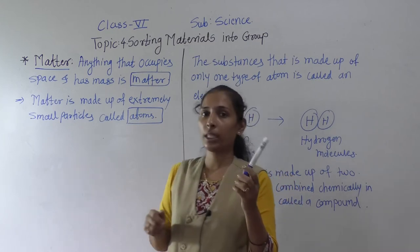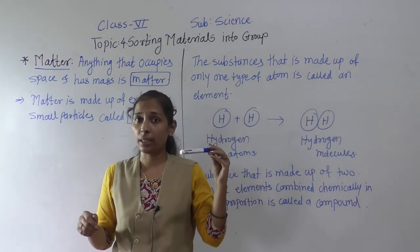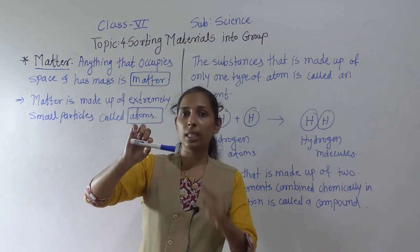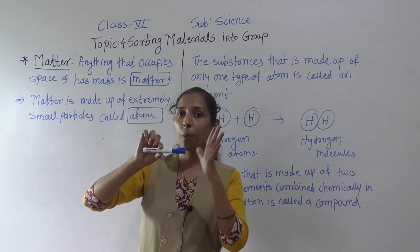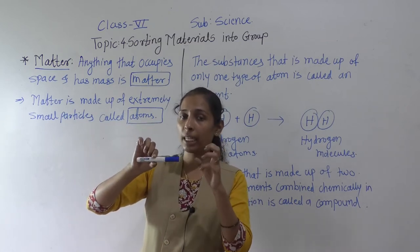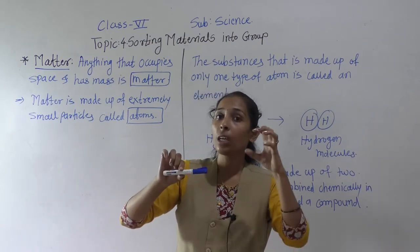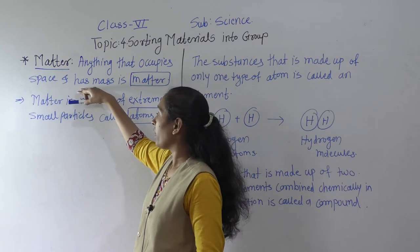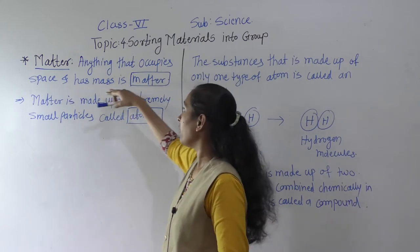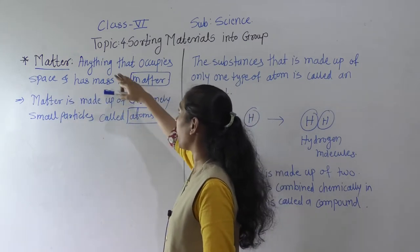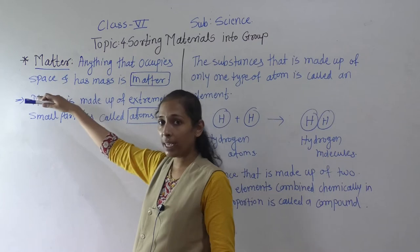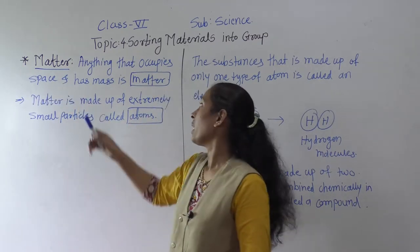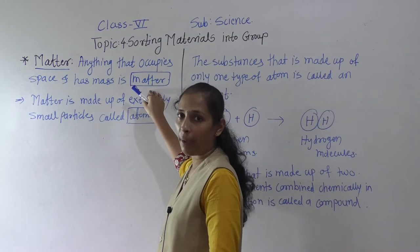For example, if I take this marker and keep it in the air, it occupies some space and it has some amount of mass. That property is what we call matter. So anything that occupies space and has mass is called matter.